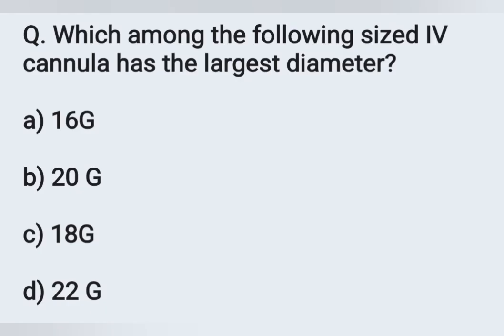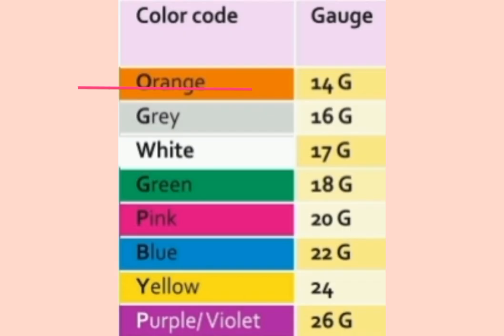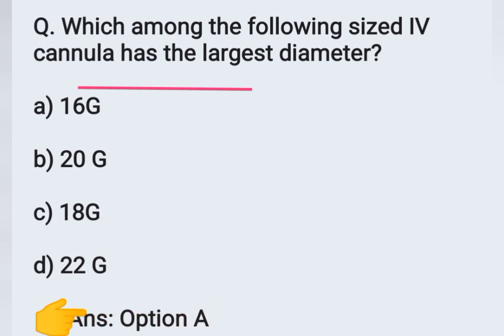The next question: which among the following sized IV cannulas has the largest diameter? Options: A - 16 gauge, B - 20 gauge, C - 18 gauge, D - 22 gauge. The IV cannula colors are: yellow 24 gauge, blue 22 gauge, pink 20 gauge, green 18 gauge, gray 16 gauge, orange 14 gauge, and purple/violet 26 gauge. The greatest diameter belongs to 16 gauge. Correct answer: option A, 16 gauge.